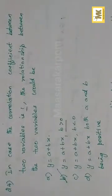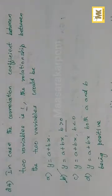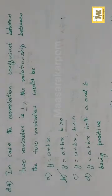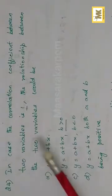Question number 24. In case the correlation coefficient between two variables is positive 1, the relationship between the two variables would be Y is equal to A plus BX where B is greater than 0. That is the linear relationship — so that answer is okay.